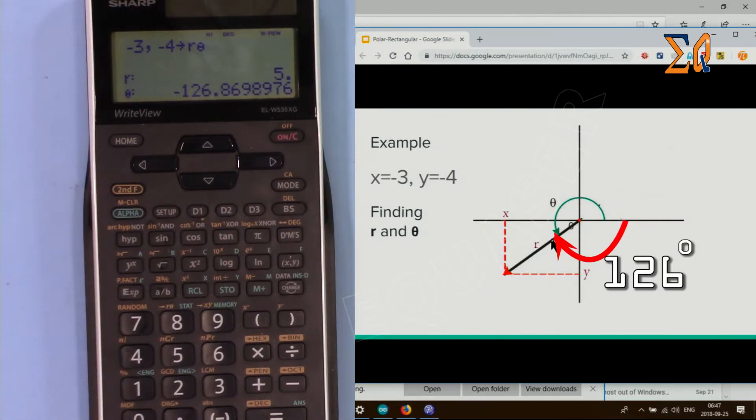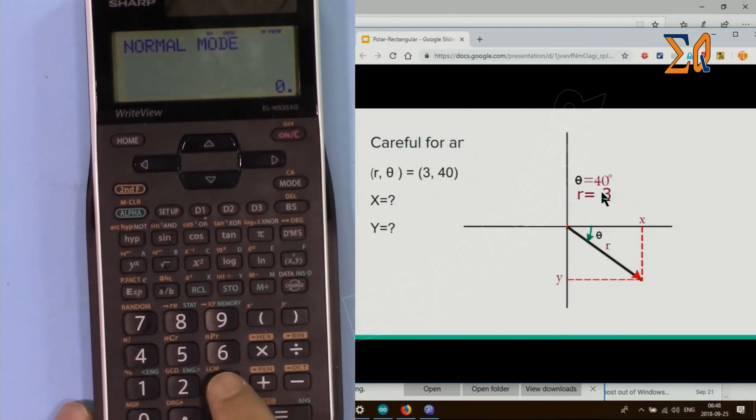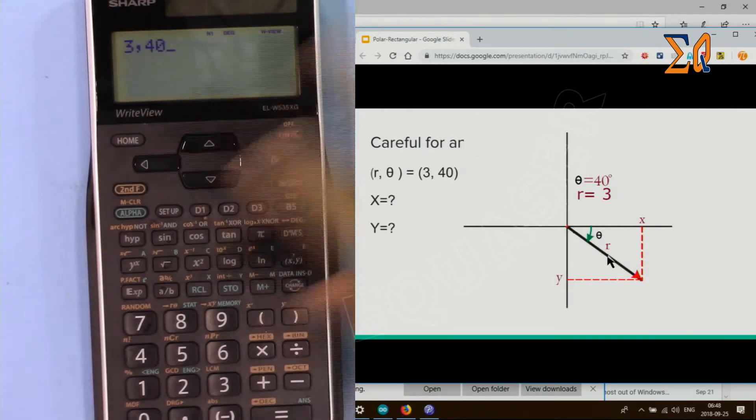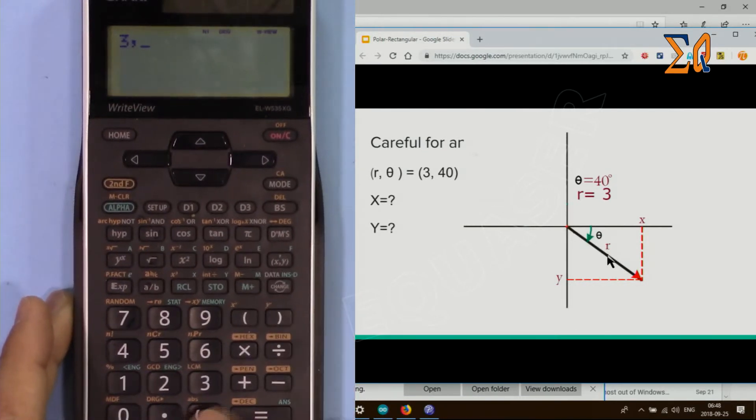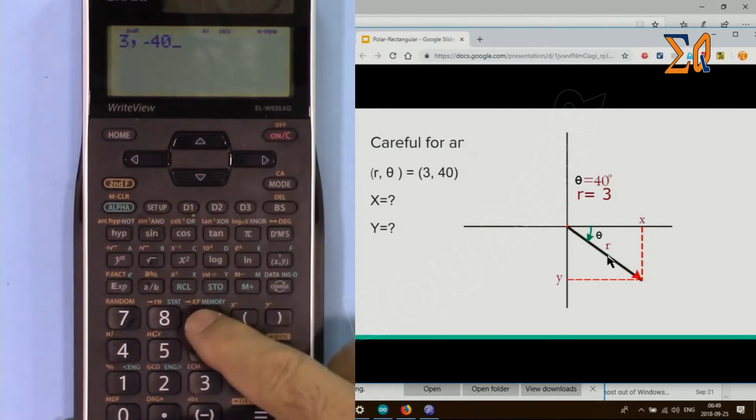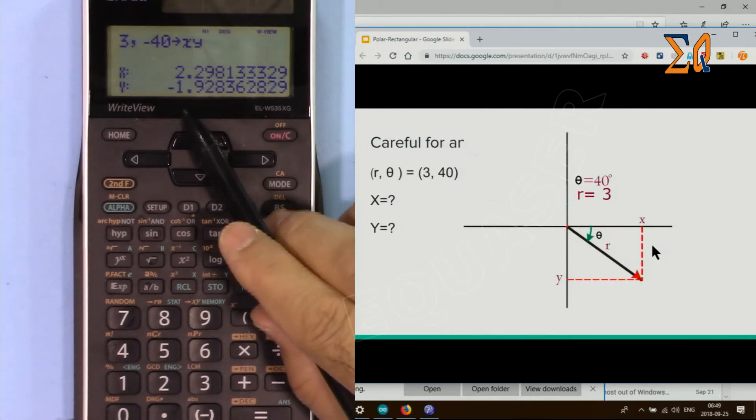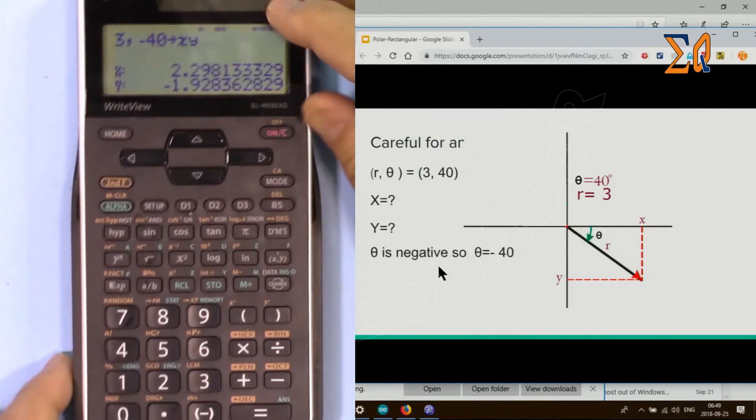Now here we have R and theta. R is 3, angle is minus 40°. Here's a trick: because the angle is minus, we have to enter 3 comma minus 40, then convert it to X and Y using second function and 9. As you can see, X shows 2.29 and Y shows minus 1.92, which is correct.